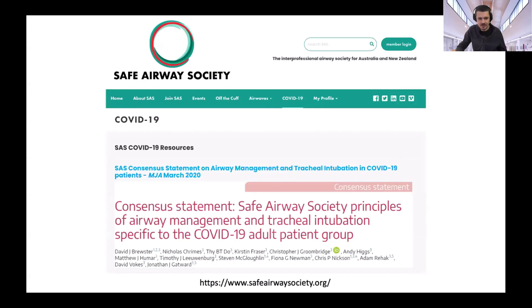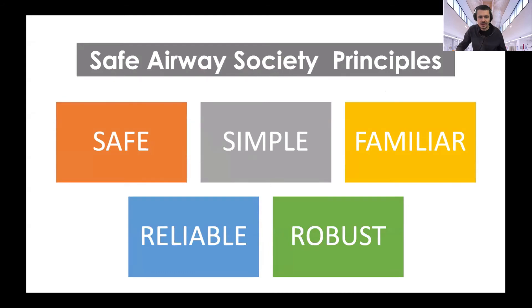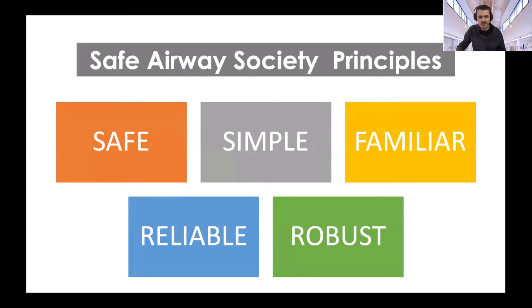I was fortunate to be involved in the Safe Airway Society guidelines, which crystallised many of the concepts from this work and developed infographics, cognitive aids, and checklists that other centres could use and modify for their own context. Key principles from those guidelines: anything we do needs to be safe for patients and staff, simple so it can be efficiently implemented, ideally familiar to staff, and reliable so it works regardless of which personnel are involved, and ultimately robust so that it works across different patients and environments.